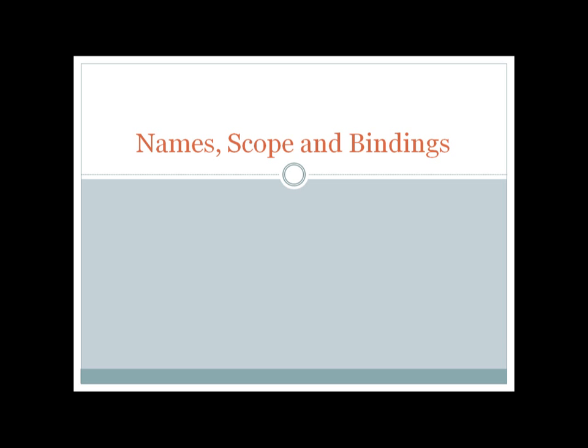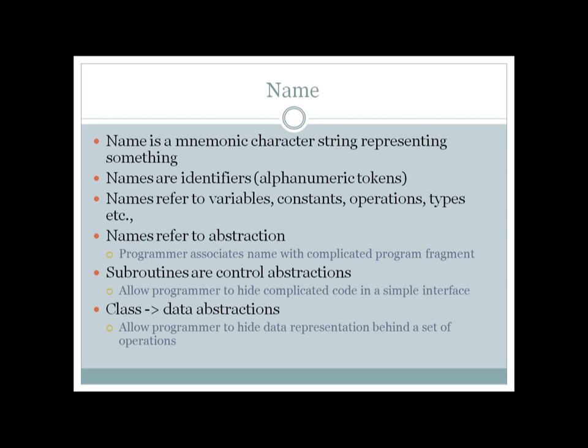Starting with the first module, the syllabus covers names, scopes, and bindings. In this first lecture, I will explain what names and bindings are, and from the second lecture onwards I will start with scope. So, what is a name? A name is nothing but a mnemonic character representing something — it can be a variable, a type, an identifier, or a subroutine. A name is a mnemonic character representation of something.